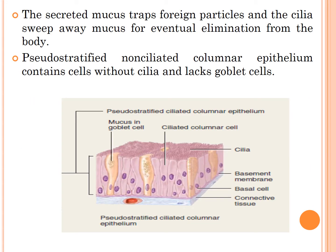Secreted mucus traps foreign particles, and the cilia sweep away the mucus for eventual elimination from the body. Pseudostratified non-ciliated columnar epithelium contains cells without cilia and lacks goblet cells.